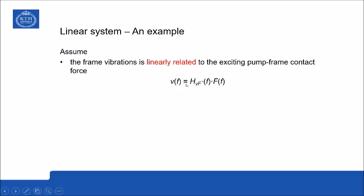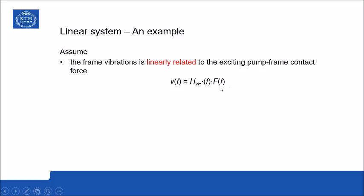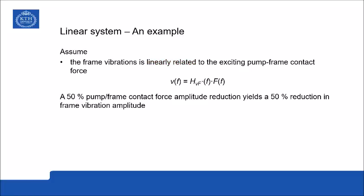And what we say here is that we somehow can reduce the amplitude of the contact forces with 50% of its original value. And if the frequency response function is not affected by this reduction, then of course the responding vibration velocity will also be reduced with 50% from its original value. So the change in the source will create a response that is changed in a proportional manner to the excitation. That is what we have earlier called the principle of homogeneity, which holds for a linear system.